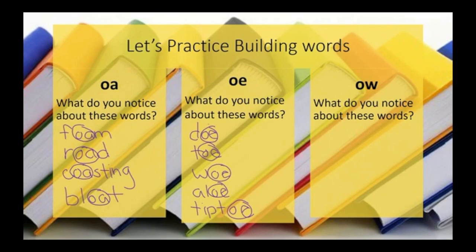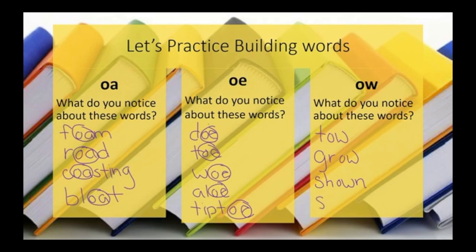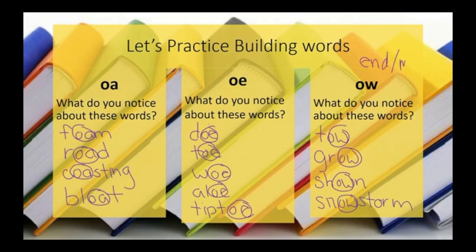For OW, we have words like tow — like to tow your car, not toe like your toe — grow, and shown. We also have compound words like snowstorm, which has the OW in the middle of the word. So OW can either be at the end of a word or in the middle of a word. OE is going to be a sound that comes at the end of a word, and OA is going to be a sound that usually comes inside, in the middle of a word.